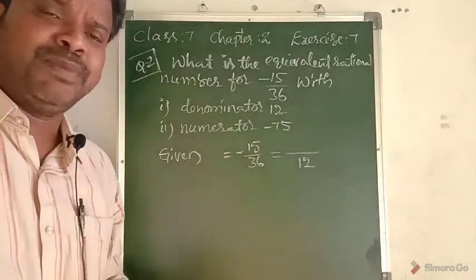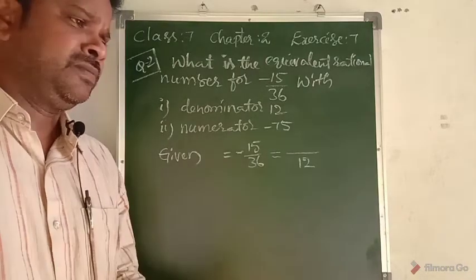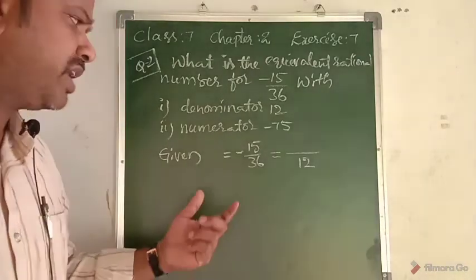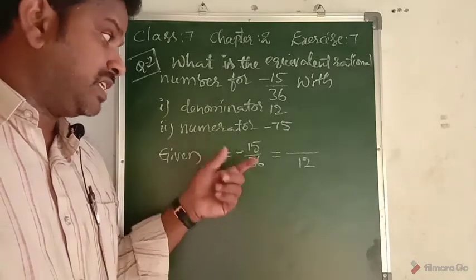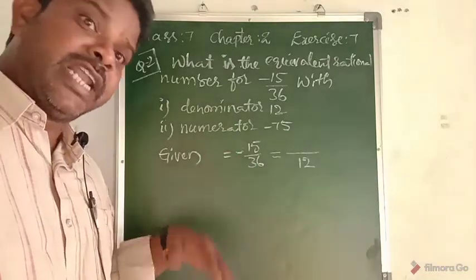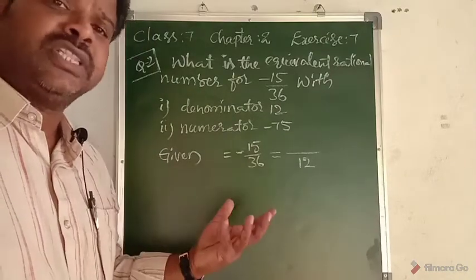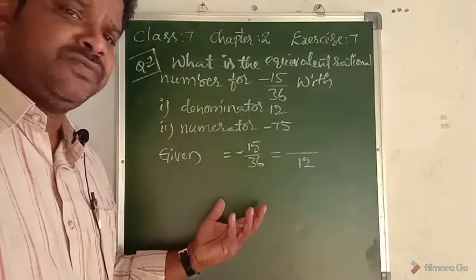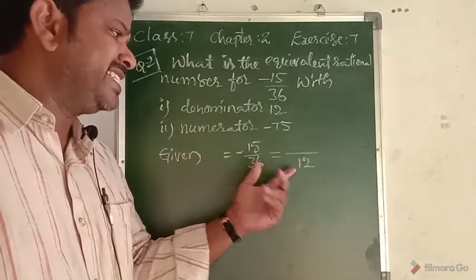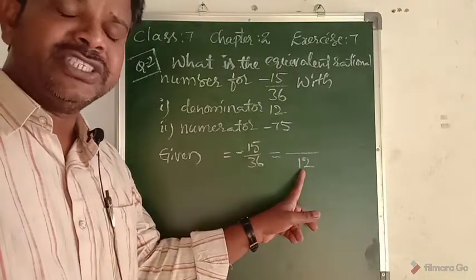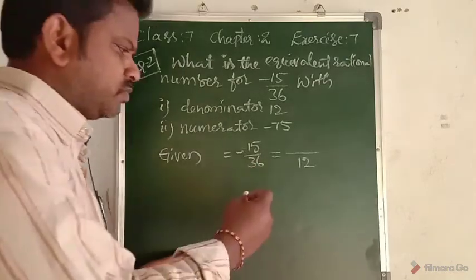If you divide both the numerator and the denominator by the same number, you can also write equivalent fractions. So by using that division process, we'll write the equivalent fraction of minus 15 by 36 with denominator 12.